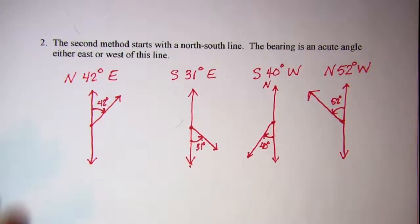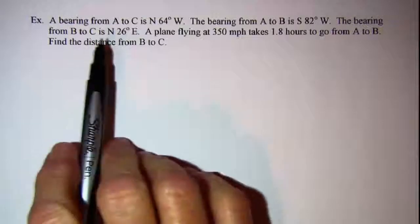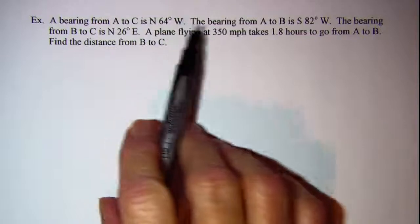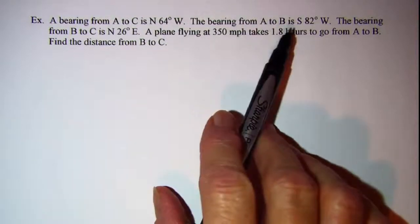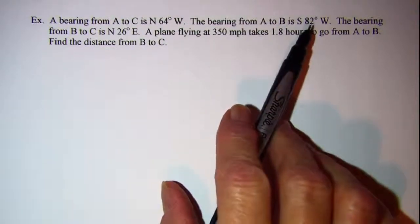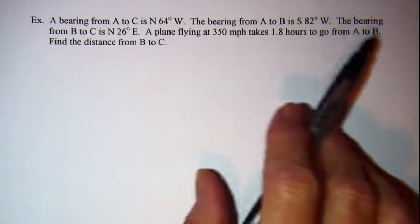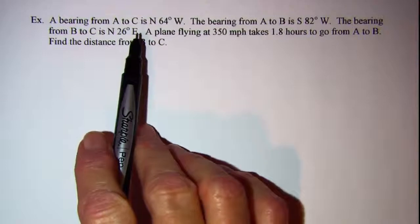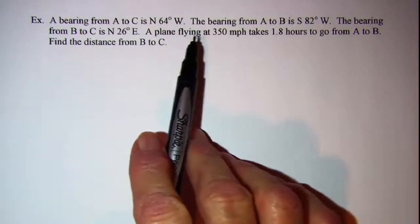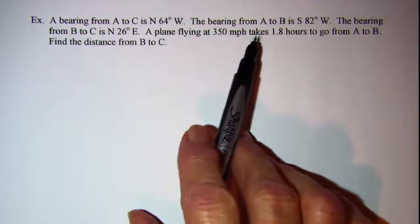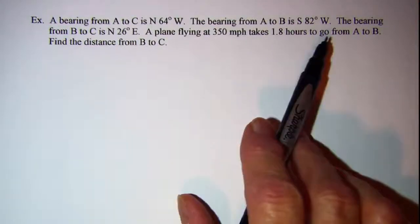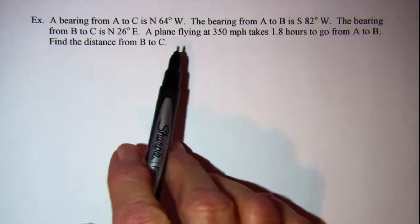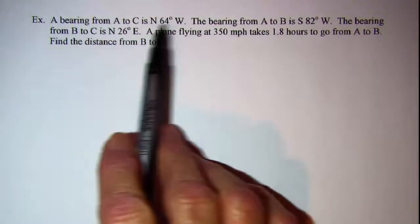Now let's do an example. A bearing from A to C is north 64 degrees west. The bearing from A to B is south 82 degrees west. The bearing from B to C is north 26 degrees east. A plane flying at 350 miles per hour takes 1.8 hours to go from A to B. Find the distance from B to C.